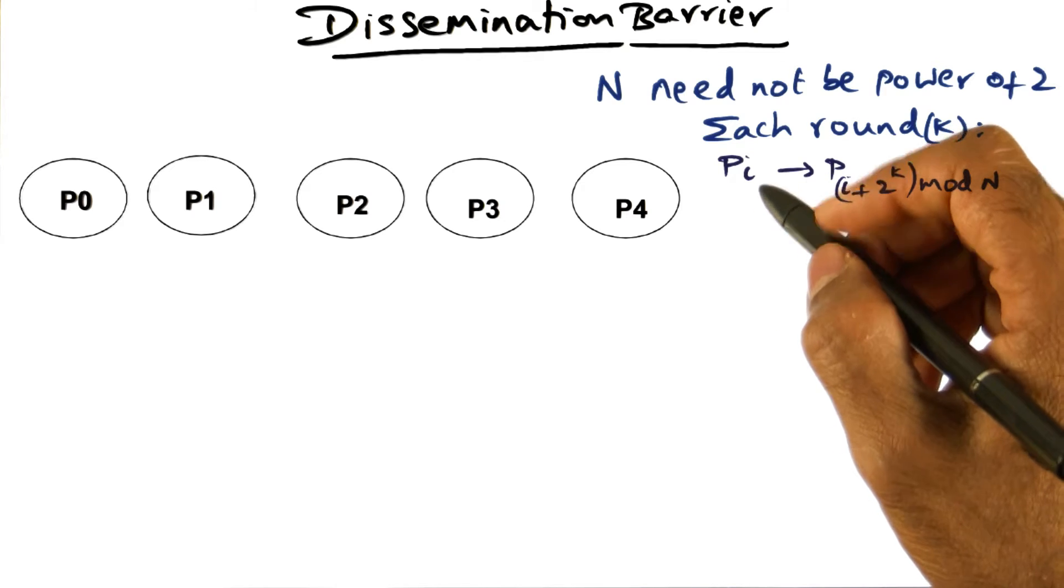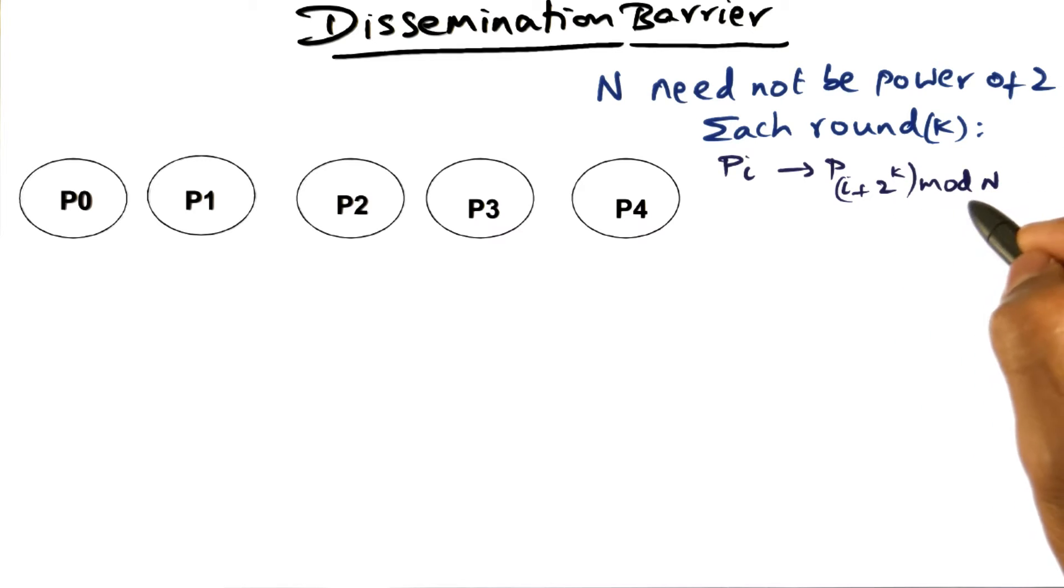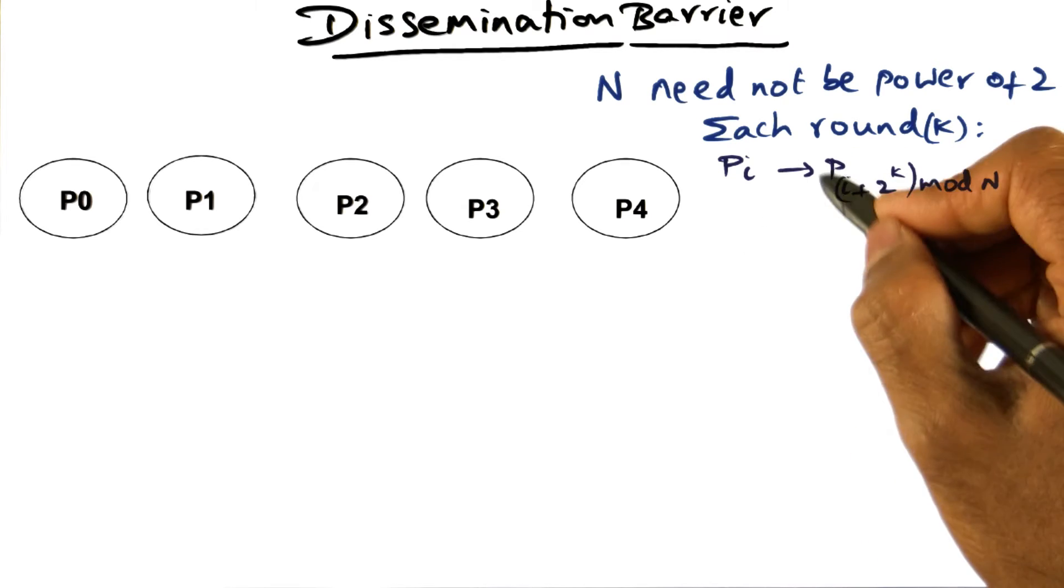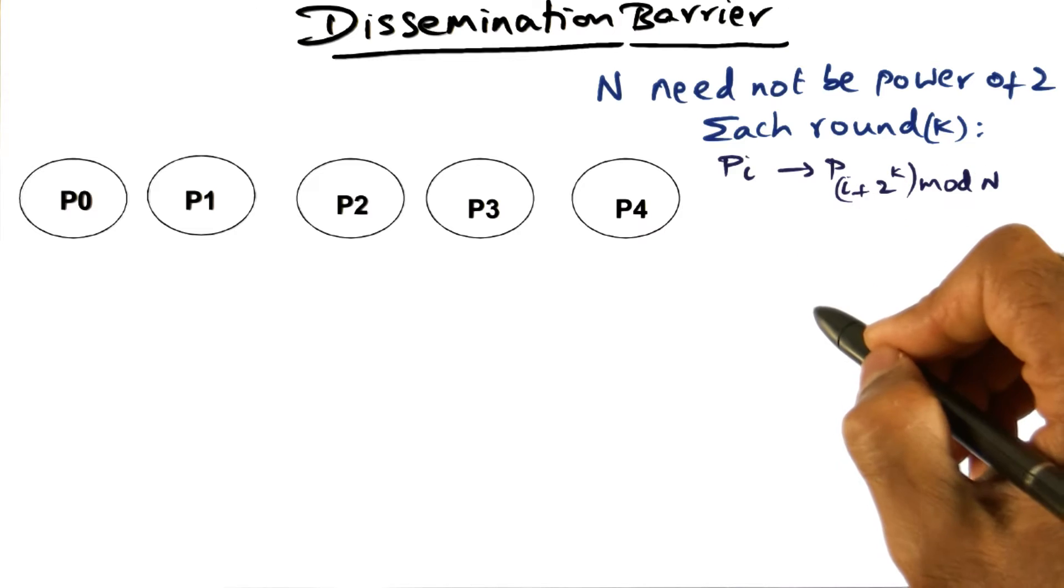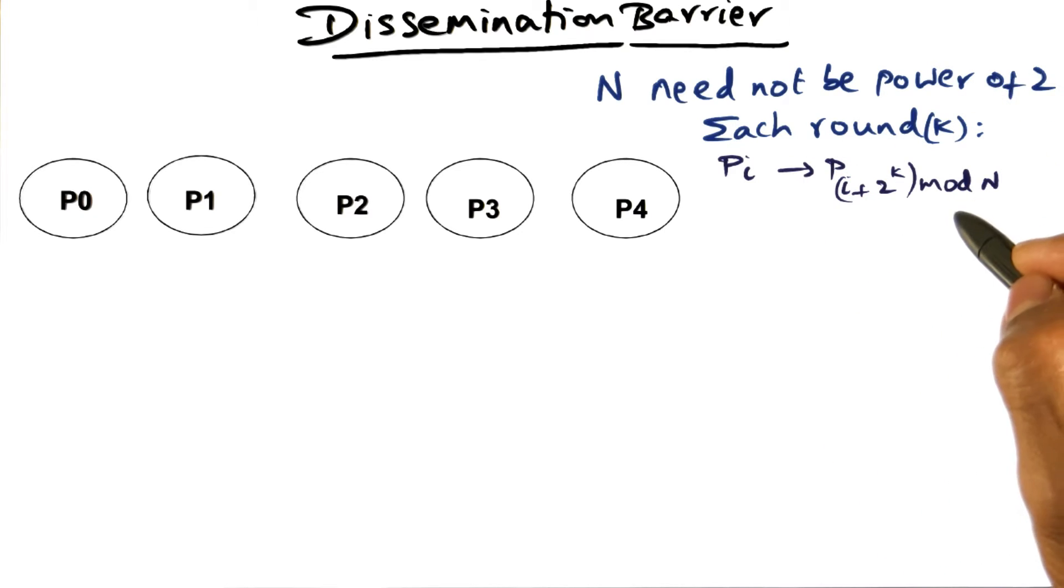The idea is that processor pi will send a message to processor pi plus 2 to the k mod n. This is the peer to which pi is going to send a message to. An example is always more illustrative.